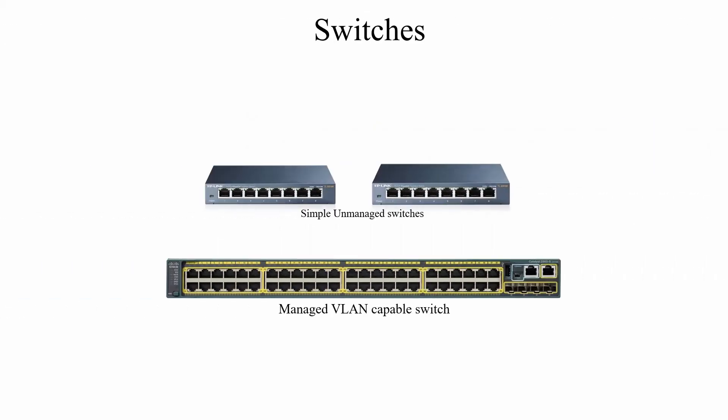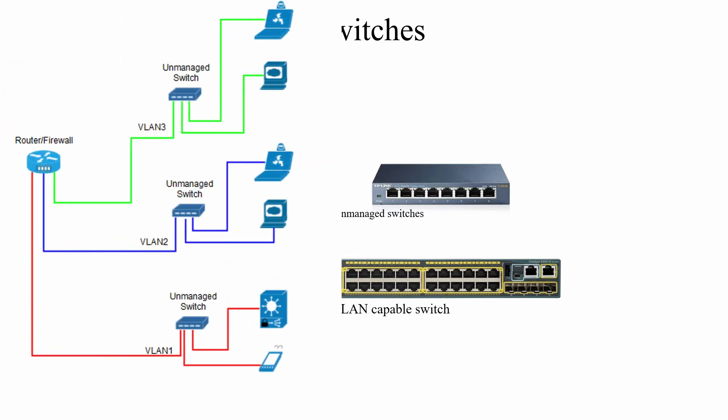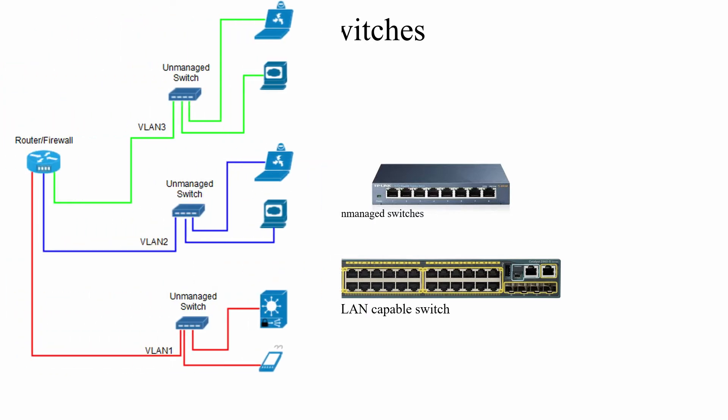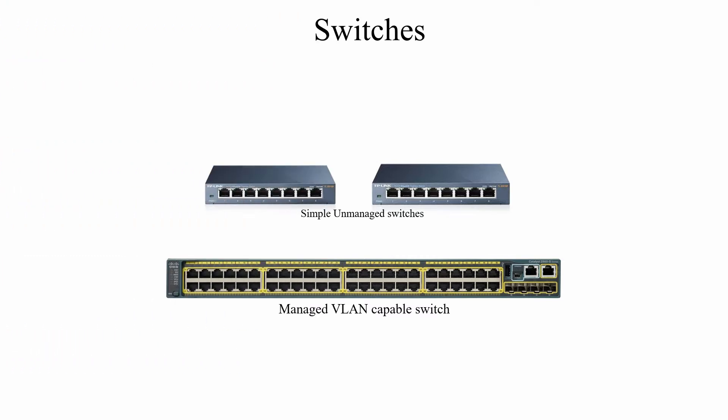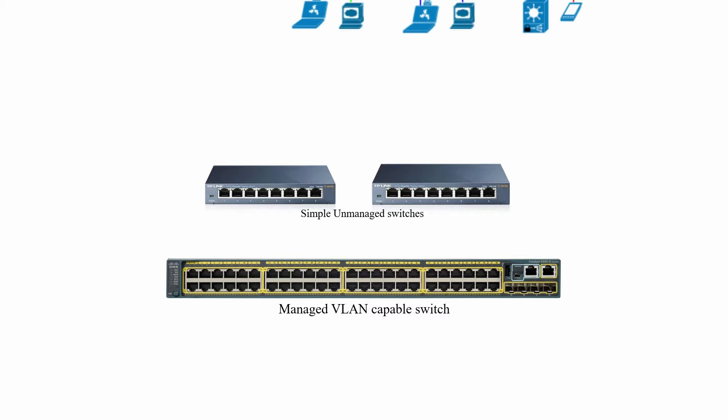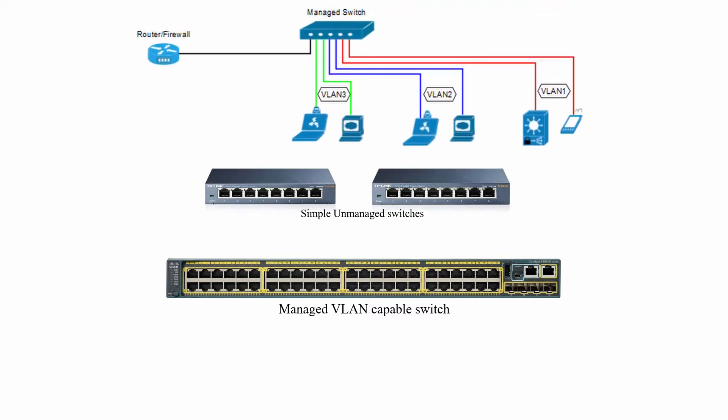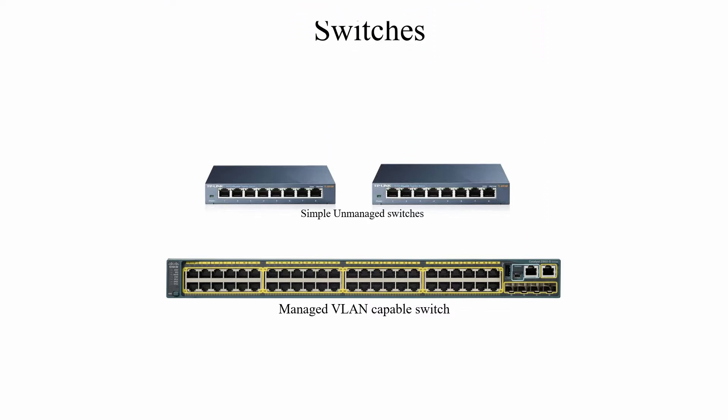It is good practice to create multiple isolated networks or VLANs in an environment. Devices may be connected by one or more unmanaged switches for each network, with one switch from each network connected to an isolated LAN port on the firewall. Another configuration is to have one or more managed switches with groups of ports configured for a different network or VLAN, and a trunk port from the switch connected to a LAN port on the firewall.